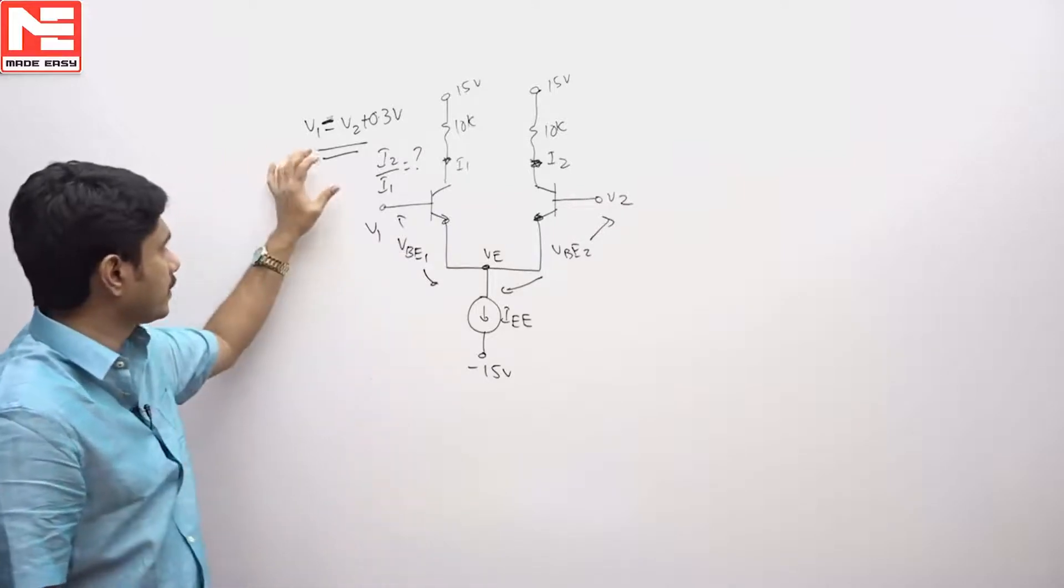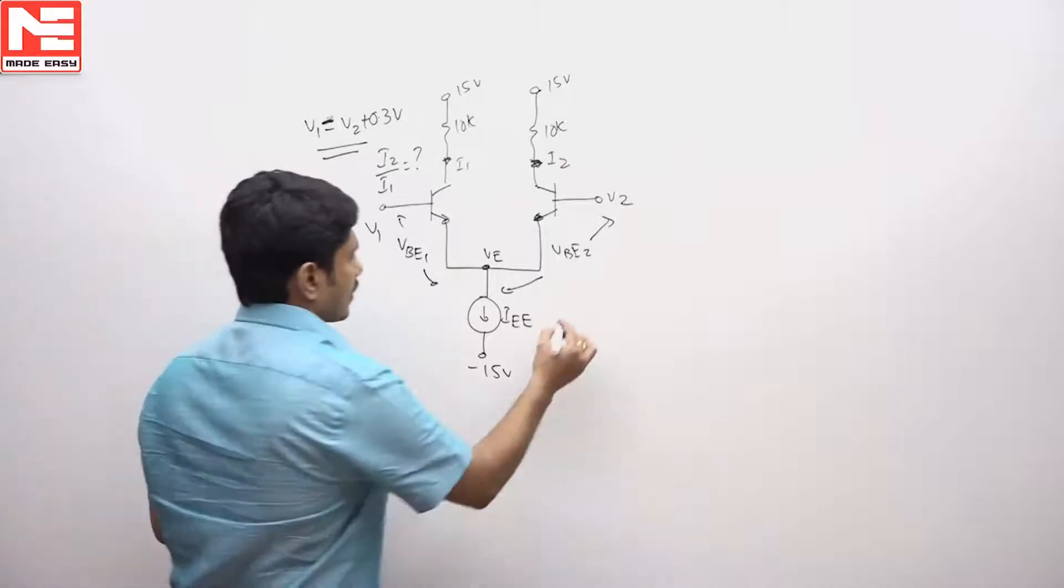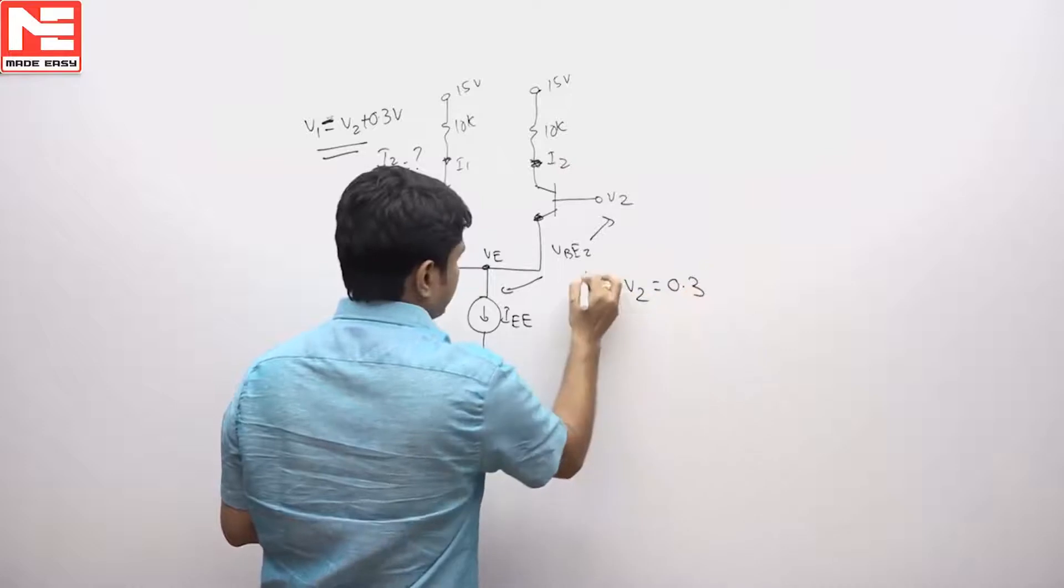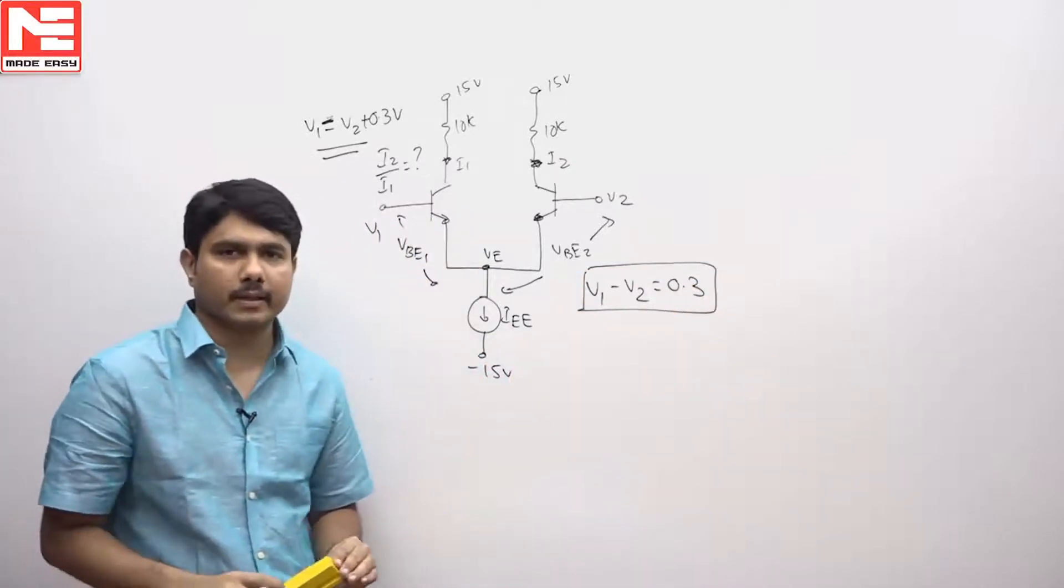He has given the equation V1 equals VT plus 0.3. The meaning is V1 minus V2 can be written as 0.3. So the difference between V1 minus V2 you can take as 0.3.